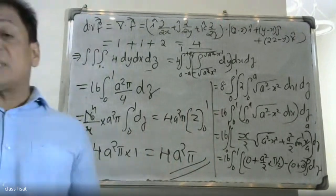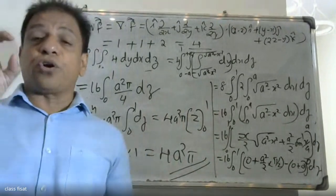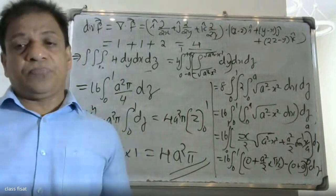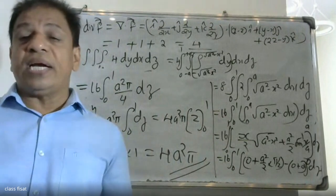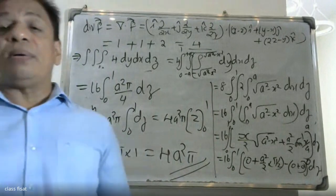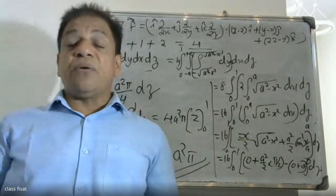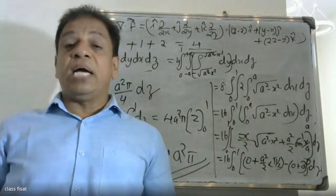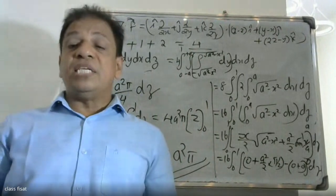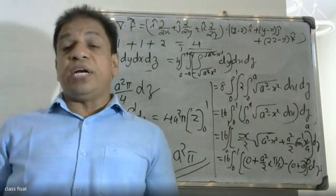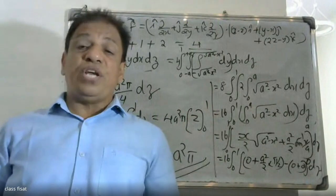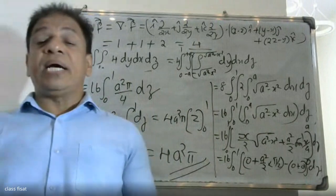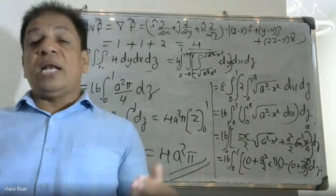So the outward flux — the double integral over sigma of F dot n dS — equals the triple integral over G of the divergence of F dV, where the divergence del dot F equals 2, confirming the final result.